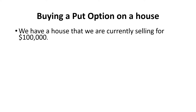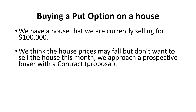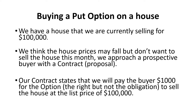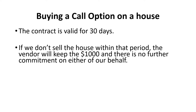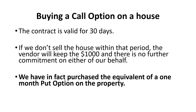So here we go — buying a put option on a house. We have a house that we are currently selling for $100,000. We think house prices may fall but we don't want to sell the house this month, so we approach a prospective buyer with a contract proposal. Our contract states that we will pay the buyer $1,000 for the option — the right but not the obligation — to sell that house at the list price of $100,000. The contract is valid for 30 days. If we don't sell the house within that period, the vendor keeps the $1,000 and there is no further commitment on either side. We have in fact purchased the equivalent of a one-month put option on the property.